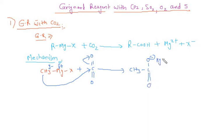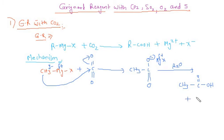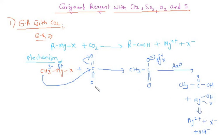Now MgX gets attached to this, which is having delta positive. Further with this, we react with water and we will be having CH3C(=O)OH plus MgOHX, which can also be written as Mg2+ plus X- plus OH- because in water it gets dissociated. So from this reaction we conclude that whenever Grignard reagent reacts with carbon dioxide, a carboxylic acid is formed.